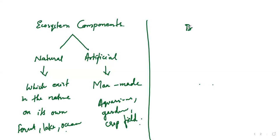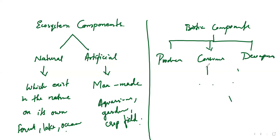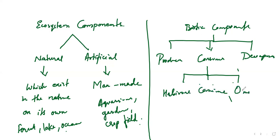Biotic components — biotic means living. In this we have three categories: producer, consumer, and decomposer. Under the consumers, again you have three types: herbivore, carnivore, and omnivore. These are the biotic components.